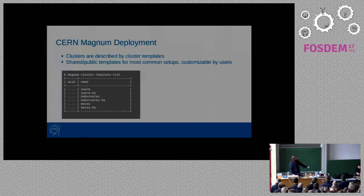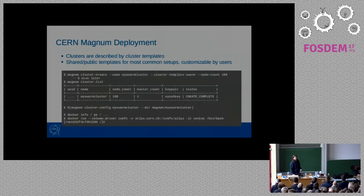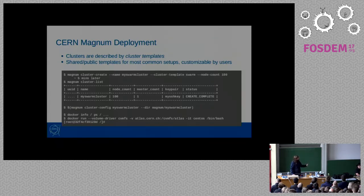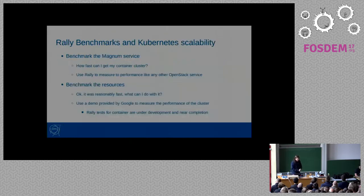This is how it looks for a CERN user to use Magnum. We have public cluster templates — Swarm, Swarm high availability, and Kubernetes high availability. The workflow is: you do cluster create, specify the node count, wait a bit depending on how many nodes you want, then do list and see that it is create complete. You run one command, create-config, which fetches all the TLS credentials. Then you talk to Docker or Kubernetes just as you would in a normal deployment.